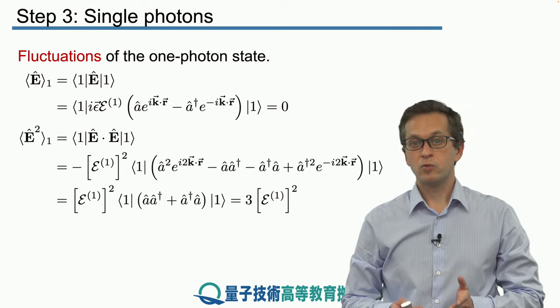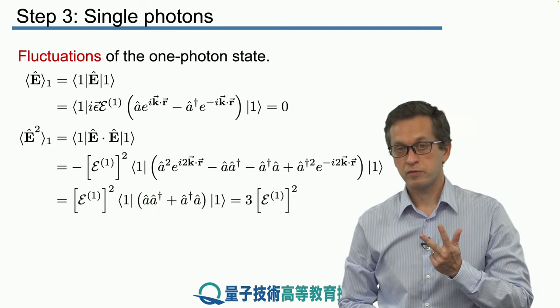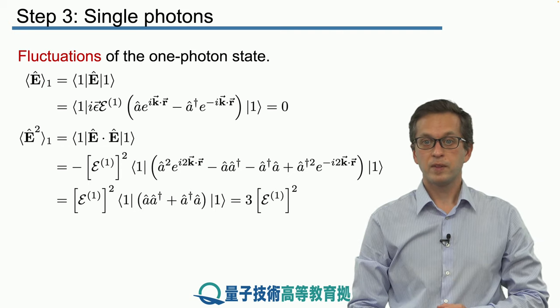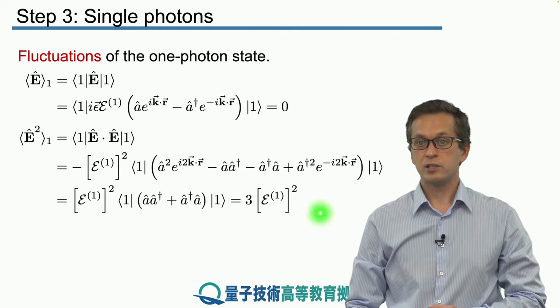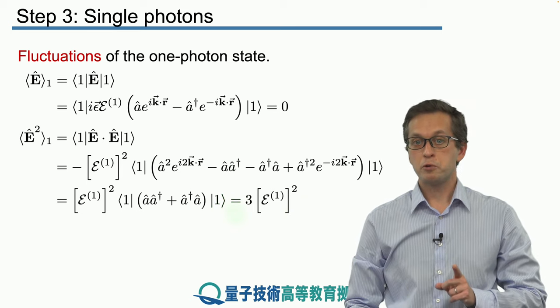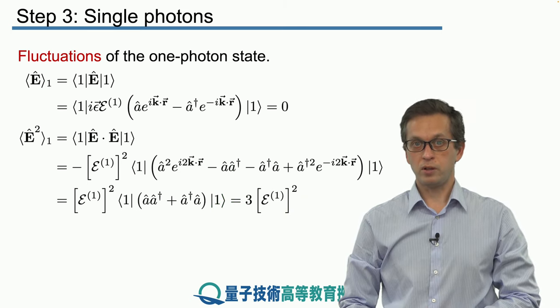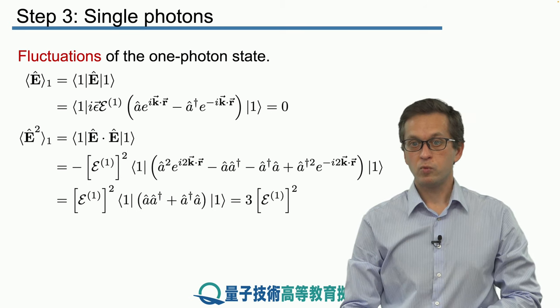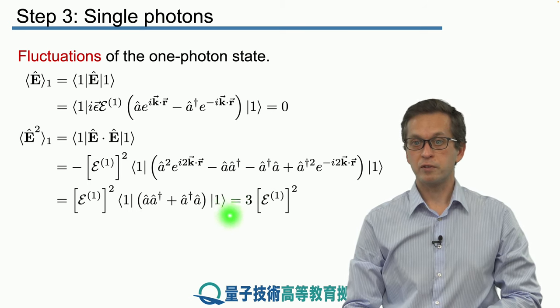And when we do that we see that we will have contributions from three parts. So the total fluctuation in the field, the total variance of the field, is given by three times the square of the one photon amplitude. To remind you, for vacuum we didn't have this factor of three.